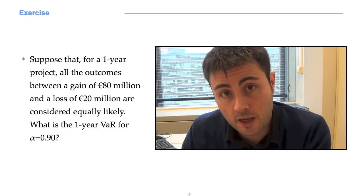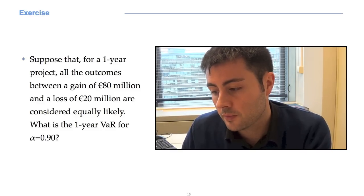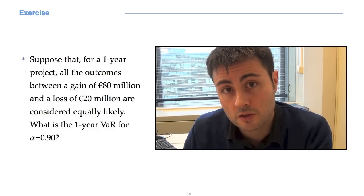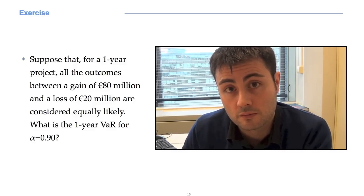Suppose that for a 1 year project, all the outcomes between a gain of 80 million euros and a loss of 20 million euros are considered equally likely. What is the VAR for alpha equal to 0.9, that is to say at the 90% confidence level? The text of the problem gives us an important information.